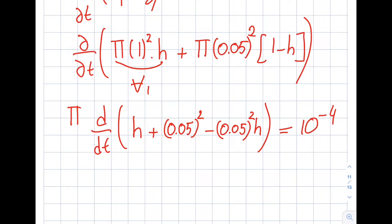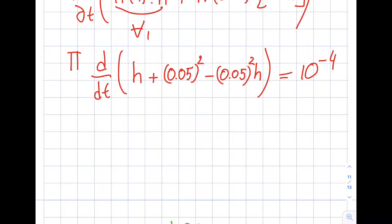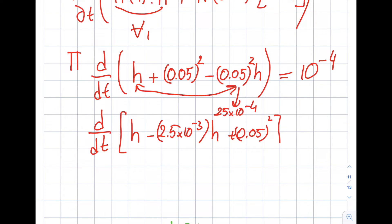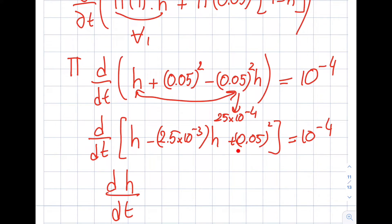Expanding: π times d/dt of [h − (0.05)²·h + (0.05)²] = 10⁻⁴. Moving π to the other side and noting (0.05)² = 25×10⁻⁴ is negligible compared to 1, and the derivative of the constant (0.05)² is zero, I get: dh/dt = 10⁻⁴/π m/s. That's the velocity of the rising water surface.